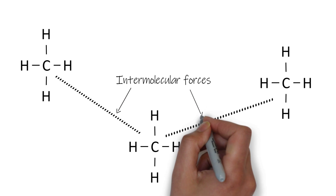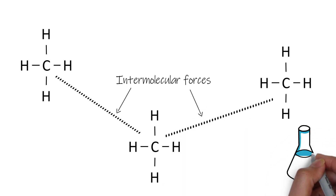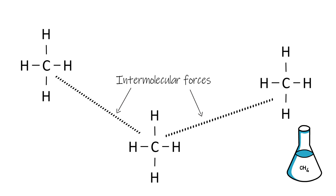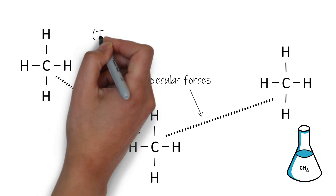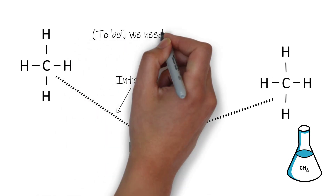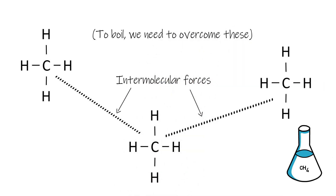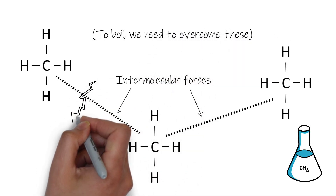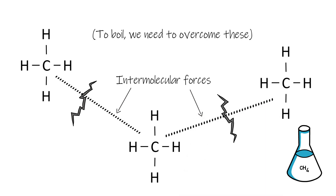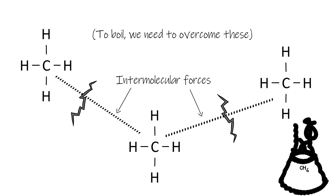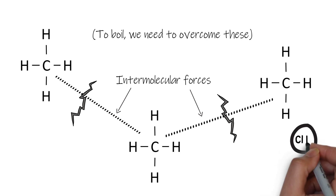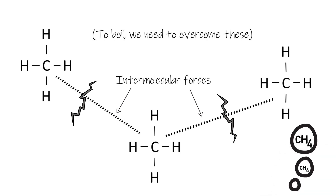In order to boil this compound — currently in liquid form as liquid methane — we would need to overcome or break these intermolecular forces, breaking the molecules apart so they float off on their own, making it into a gas. When we break enough of them, our liquid methane will boil and turn into gaseous methane. That is how you boil a simple covalent compound.